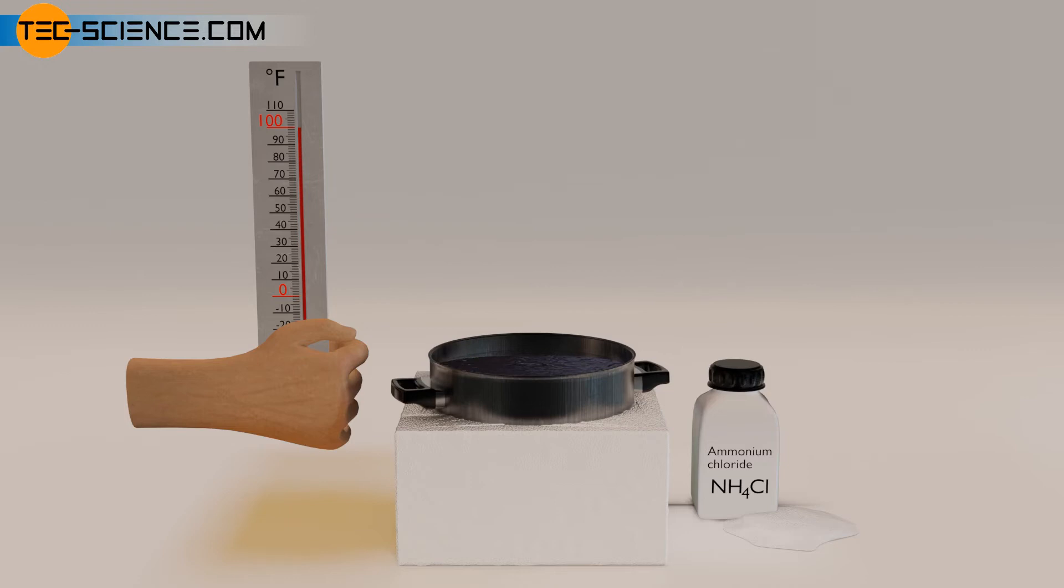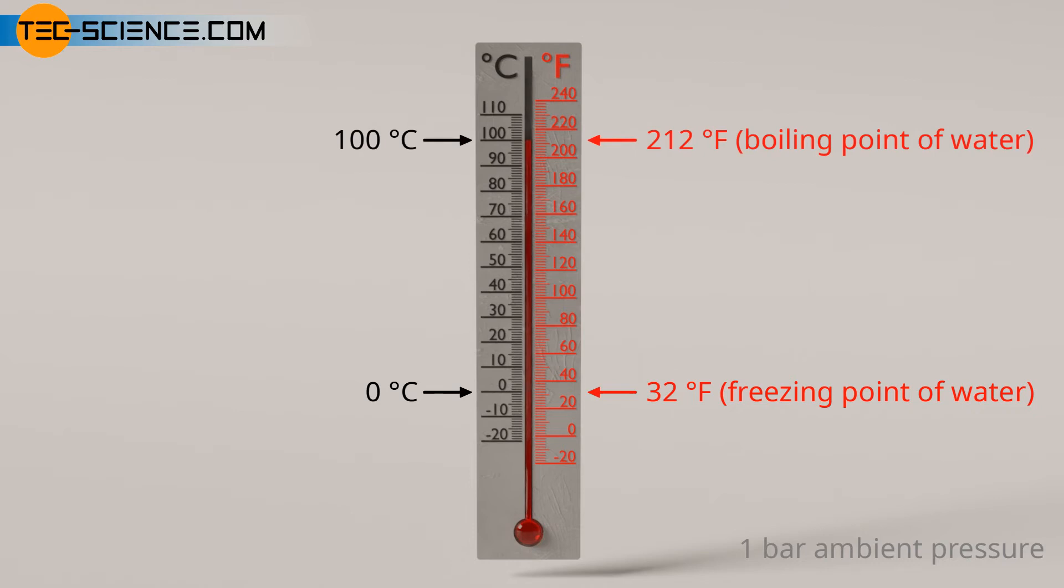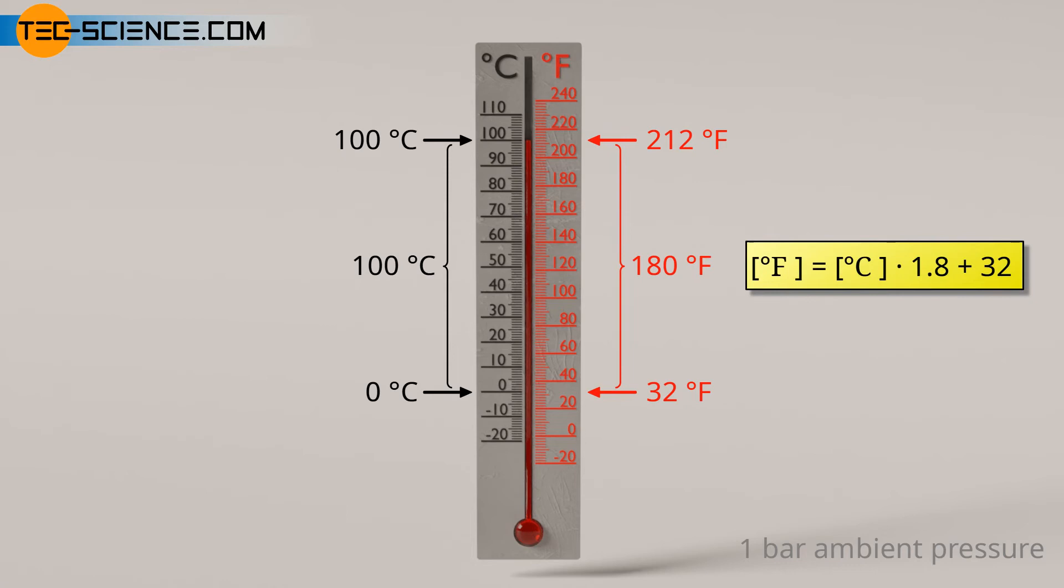For this reason, other reference points are used for today's definition of the Fahrenheit scale, namely the freezing point of water at 32 degrees Fahrenheit and the boiling point of water at 212 degrees Fahrenheit. Thus, there are 180 subdivisions, called degrees, between these reference points and not 100 subdivisions as in the Celsius scale.